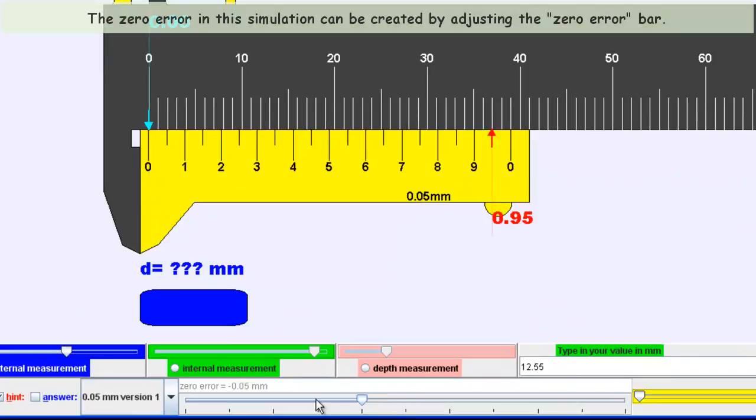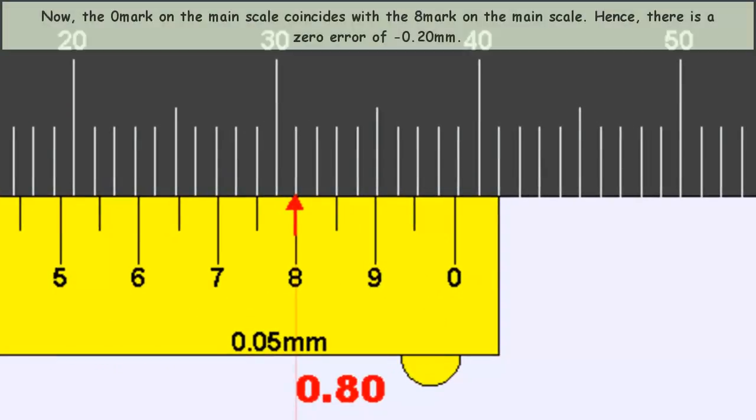In this example, the zero error is negative 0.2 mm. This means the reading will show negative 0.2, which appears as 0.8 on the scale, but represents a value less than zero.